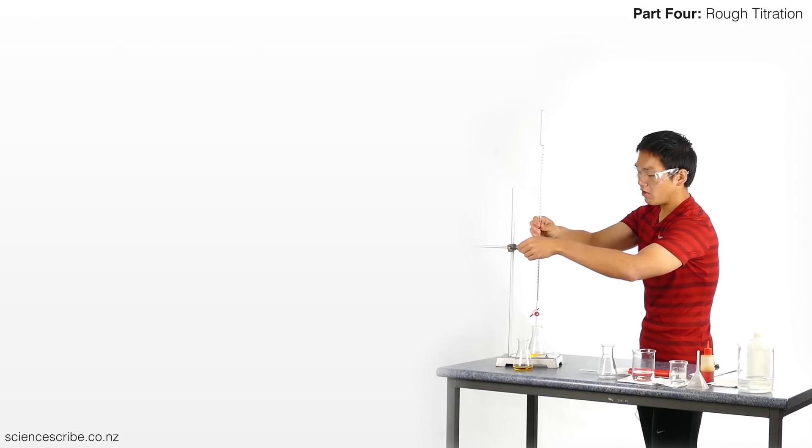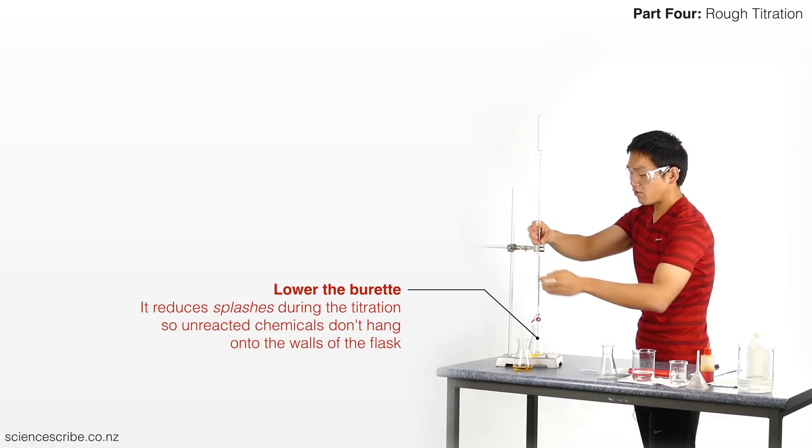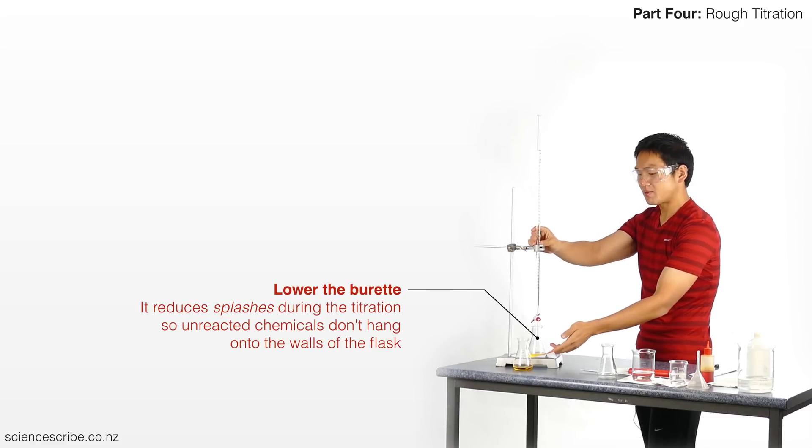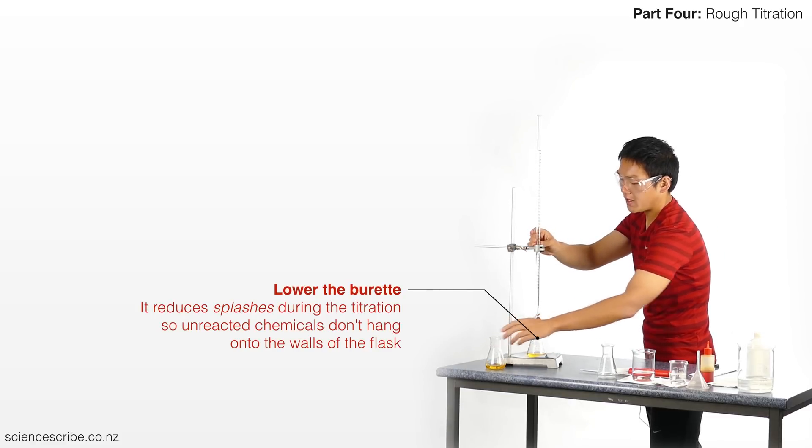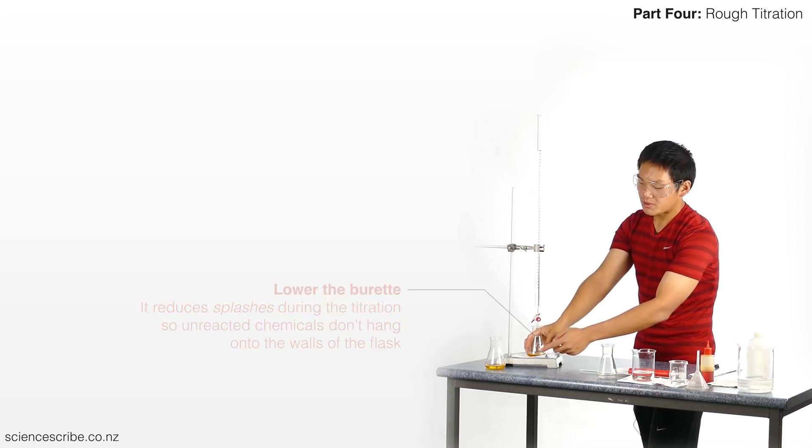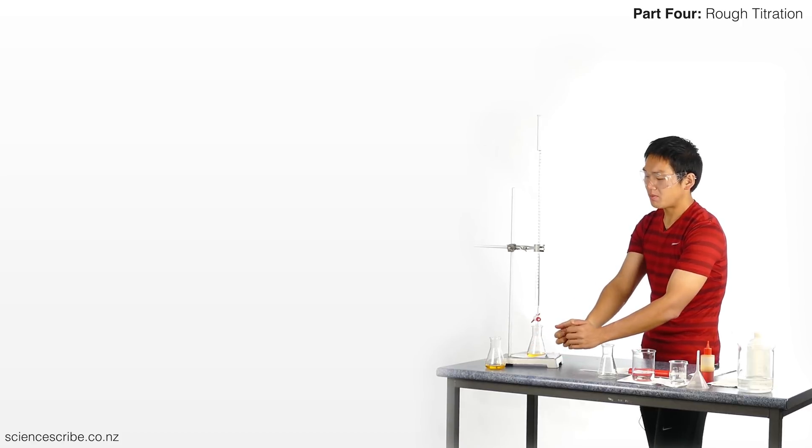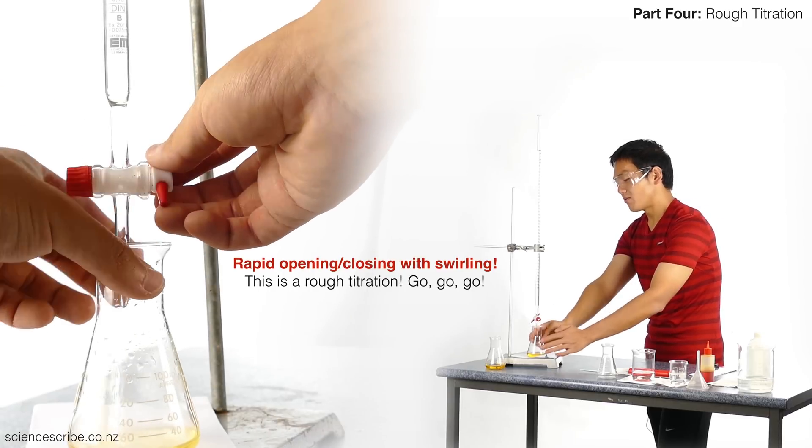I am also going to lower my burette a little bit. The reason for that is because during a titration, I want to reduce the amount of splashing that goes on inside my flask. By reducing the amount of splashing in my flask, it also reduces how many drops I end up getting coated on the outside of my flask. There should be no drops along the outside. The less drops on the walls of that flask, the less I have to wash it down using my wash bottle.